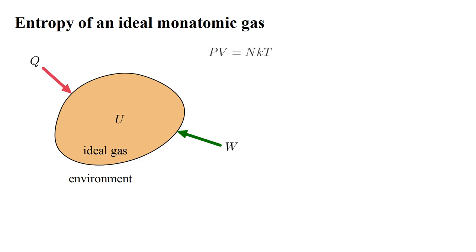The ideal monatomic gas is the model system we have used throughout this series for making quantitative calculations. Let's now try to use these ideas to figure out its entropy. We denote by U the internal energy of the gas. Q is heat transferred to the gas from the environment, and W is work done by the environment on the gas. The gas satisfies the ideal gas law: pressure times volume equals number of atoms times Boltzmann's constant times temperature.